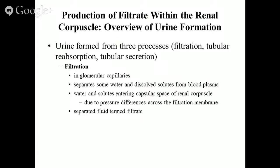Not everything happens everywhere in the nephron. You can tell people who haven't taken the time to learn where each process takes place, because they're answering the same things for every question — and it turns out to be really painful. The first step to urine formation is filtration. Filtration is the process that gets all of this fluid out of the blood and into the nephrons in the first place. It separates the extracted fluid from the blood and puts it into the nephron so the nephron can decide what stays and what leaves. Remember: filtration, step number one, happens in the Bowman's capsule.